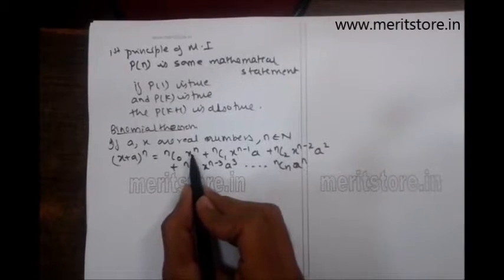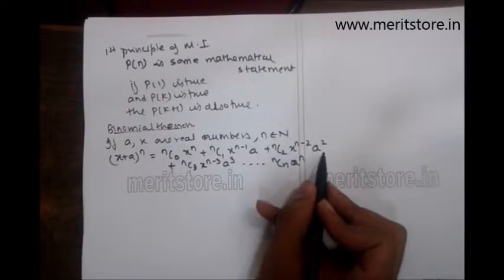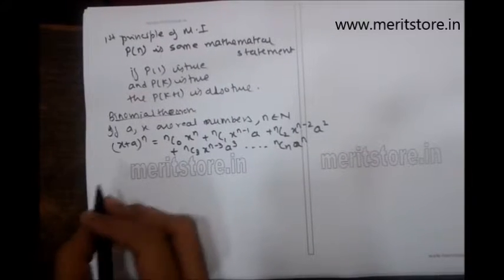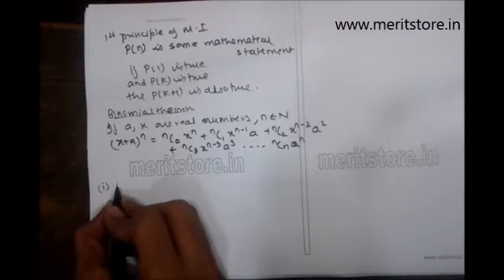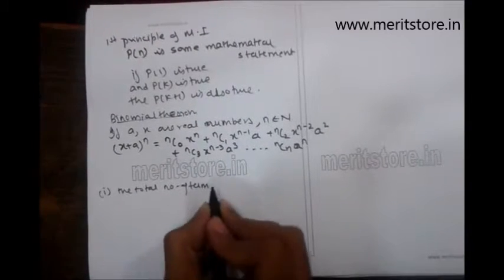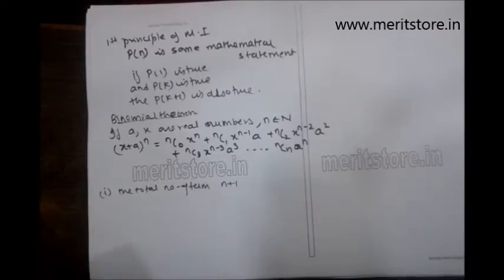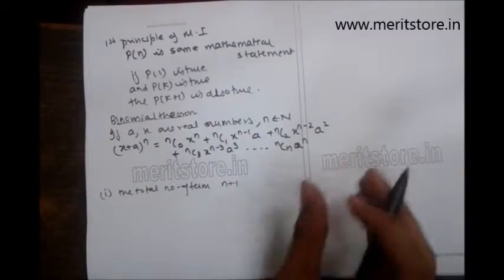If you see here the power of x is going on decreasing and the power of a is going on increasing. There are four important points to note down. The first one being the total number of terms is n plus 1. So this expansion has n plus 1 terms in it.